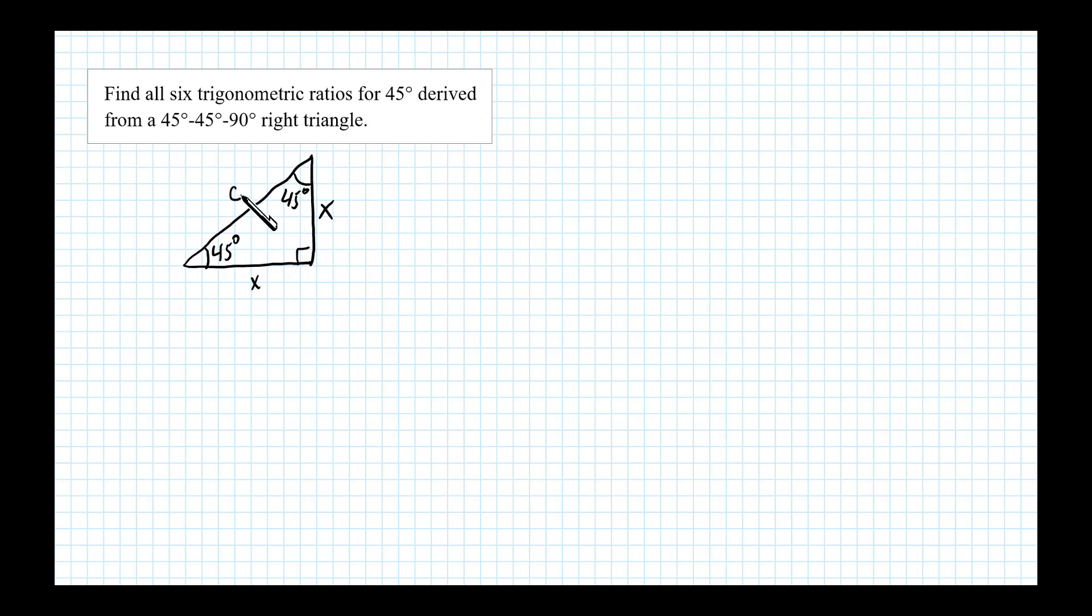Now the goal is here to find the hypotenuse in terms of x. To do that we can use the Pythagorean theorem, so we know x squared plus x squared equals c squared, or 2x squared equals c squared. Now taking the square root of both sides, we'll have plus or minus square root of 2x squared equals c, and I'll take the positive square root and that's square root of 2 times x, or x square root of 2.